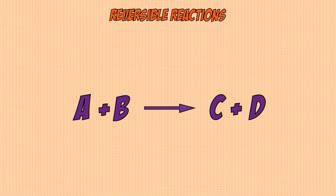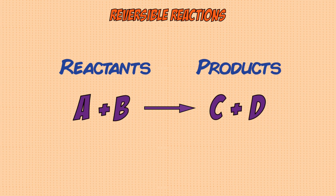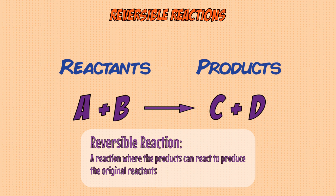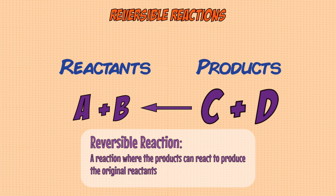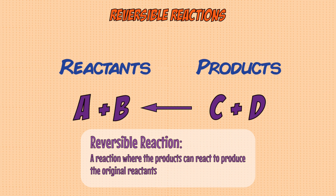First, let's talk about reversible reactions. In a normal reaction, reactants A and B react to form products C and D, represented with a one-ended arrow. Some reactions are reversible — this is when the products can react together to reform the reactants, so C and D react to form A and B.